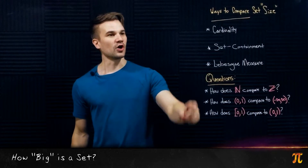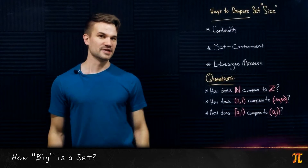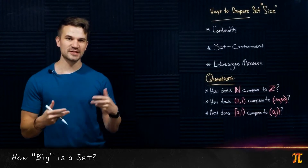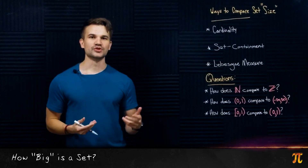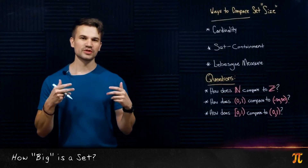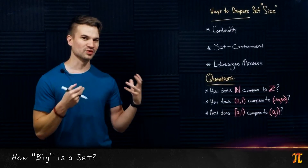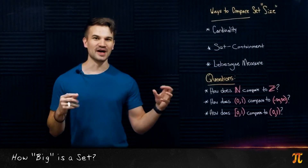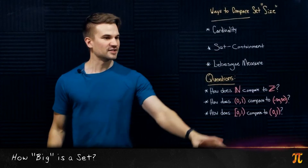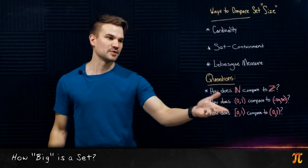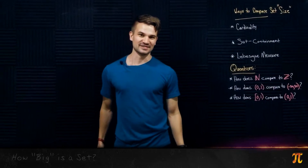The three I want to talk about today are cardinality, set containment, and the Lebesgue measure. The Lebesgue measure is specifically about the real numbers or any n-dimensional real space, but in this video we're just going to talk about the real number case. The Lebesgue measure can be thought of as the total length that the set occupies on the real number line. So we're going to cover all three of these and compare the same sets that BlackPenRedPen did.